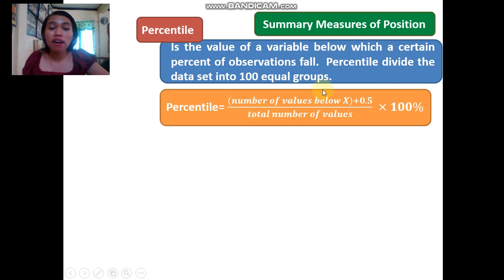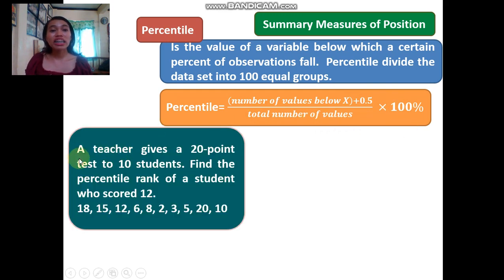This is the formula for finding the percentile: Percentile equals (number of values below x + 0.5) divided by (total number of values) times 100%. For example, a teacher gives a 20-point test to 10 students. Find the percentile rank of a student who scored 12.